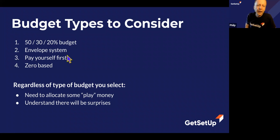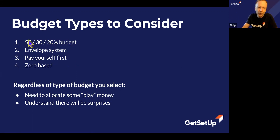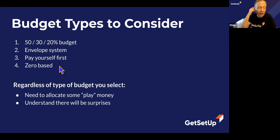The zero-base budget is probably what most of us think of as a regular budget. Every dollar has a goal — if your income is $5,000 a month, your expenses need to total $5,000 a month. You don't worry about categories or paying yourself first; you just put everything together. If you want to spend two-thirds of your money on a fancy car, that's fine — as long as you understand there won't be much left for everything else. It's a basic budget with no guardrails.